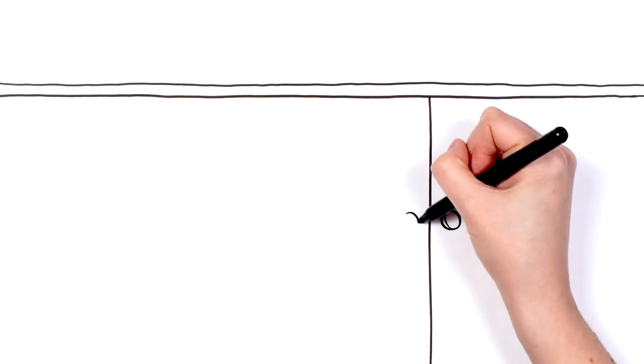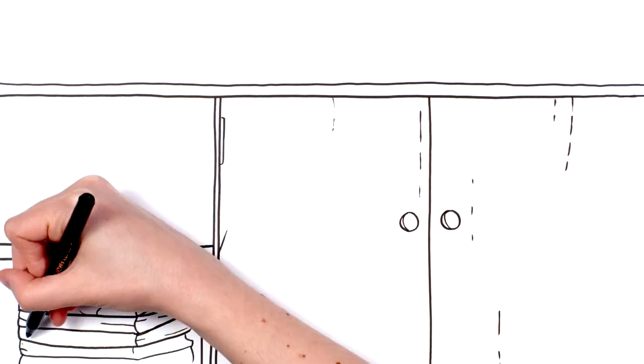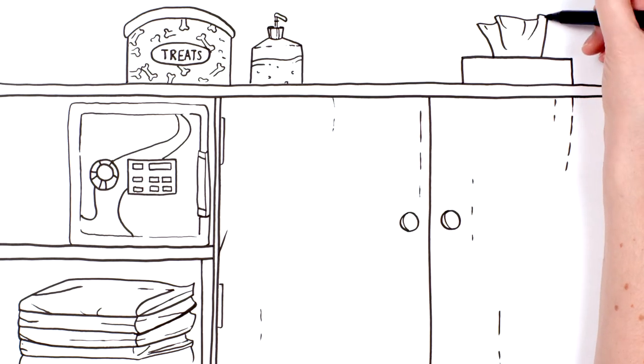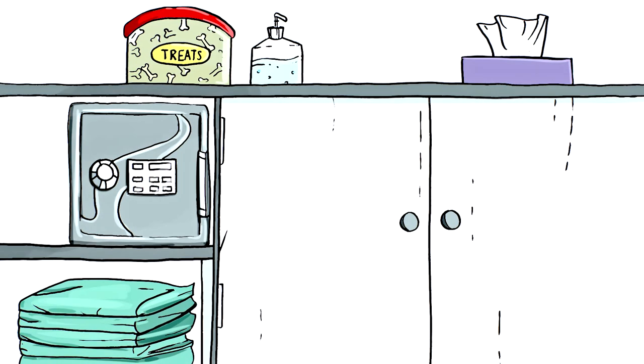A veterinarian is required to protect controlled drugs in their possession from loss or theft. Controlled drugs are to be kept in a locked storage area and must be kept locked unless the controlled drug is being placed in or removed from the storage area.